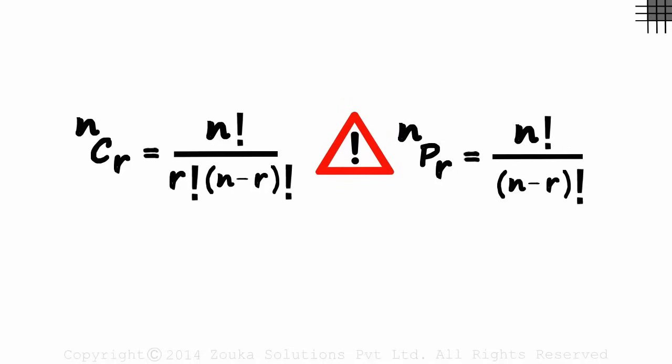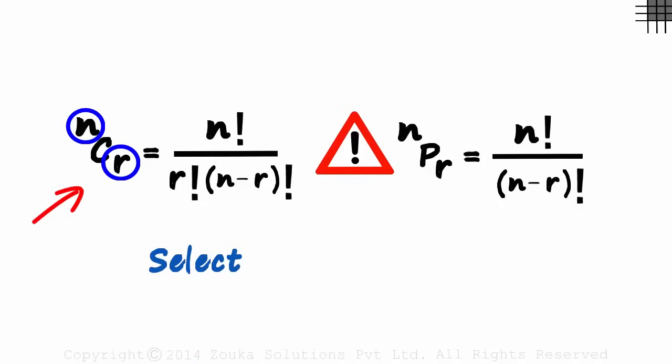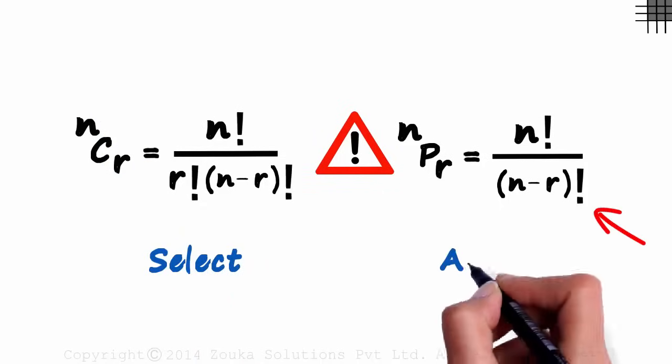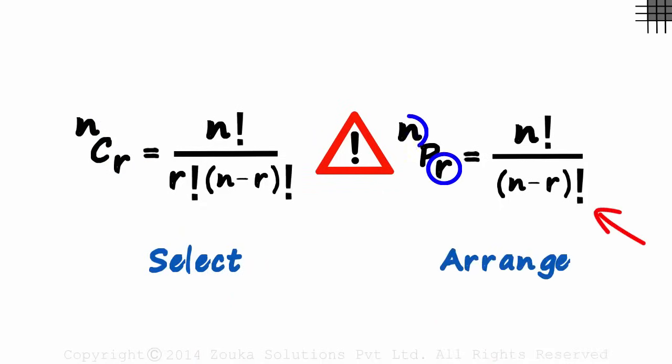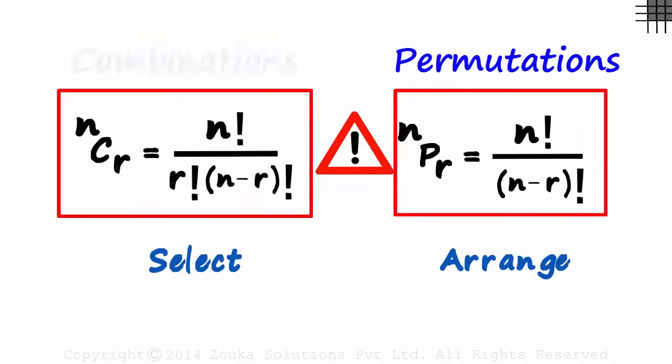In many books and videos, you would be asked to use this formula if we have to select R things out of N, and this formula if we have to arrange R things out of N. I can assure you that if you understand just these two formulas, you will never really understand permutations and combinations.